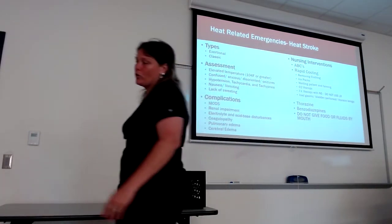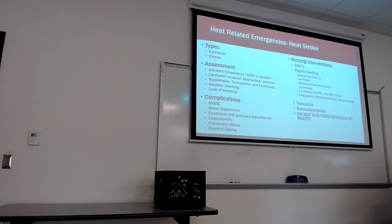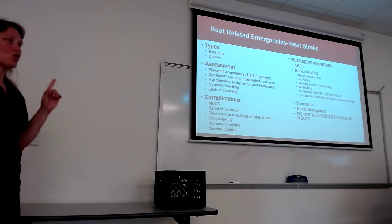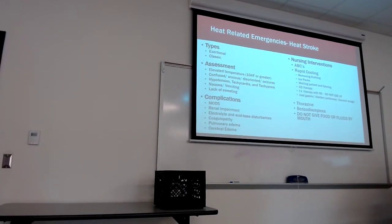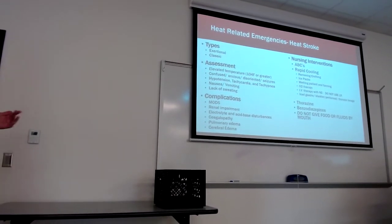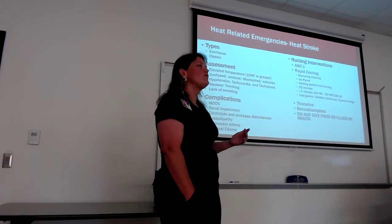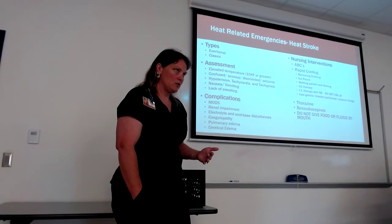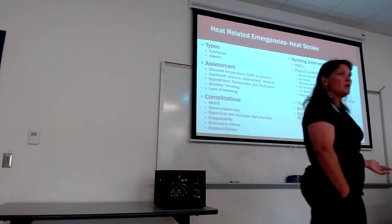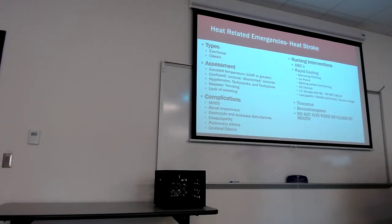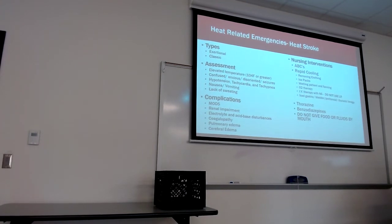Exertional heat stroke is essentially a continuation of unidentified heat exhaustion — you're outside working, miss the signs, and progress to heat stroke. The big difference is body temperature: with heat stroke, body temperature reaches 104°F or greater. Once that temperature elevates to 104°F or above, we have organ dysfunction. The body is not designed to function at that temperature, so organs start shutting down — the patient moves into MODS.